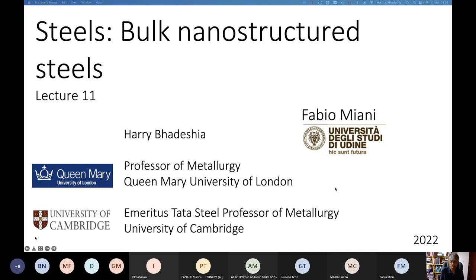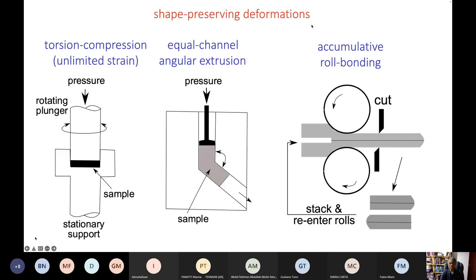This is the last lecture in the series and I'm going to talk about nanostructured steels. All of these processes keep the shape constant but you cold deform the material in such a way that you get a very fine grain structure.